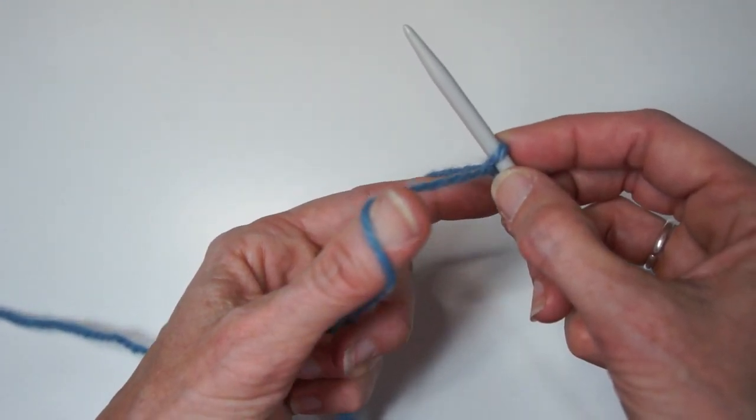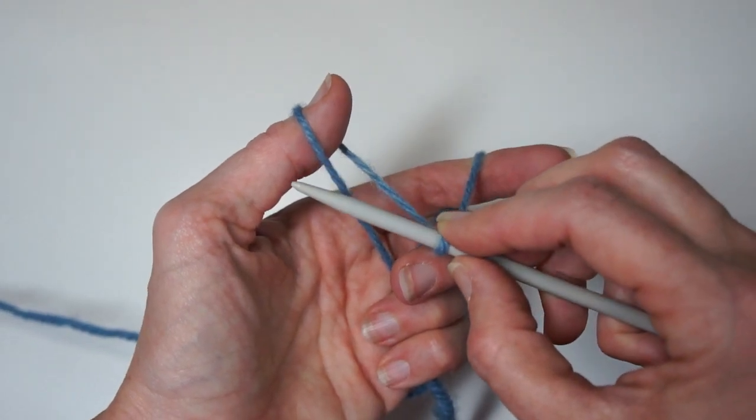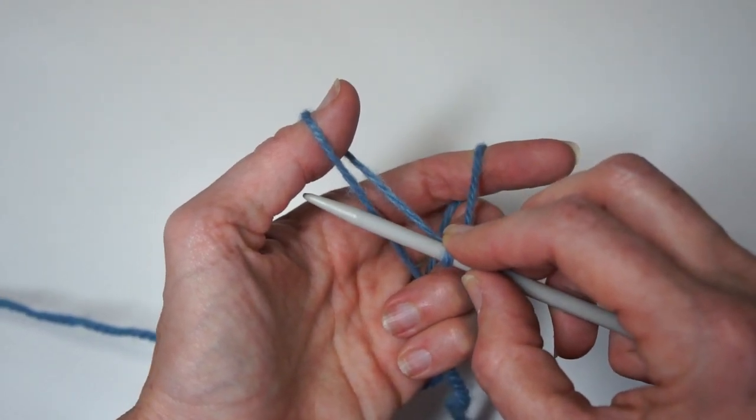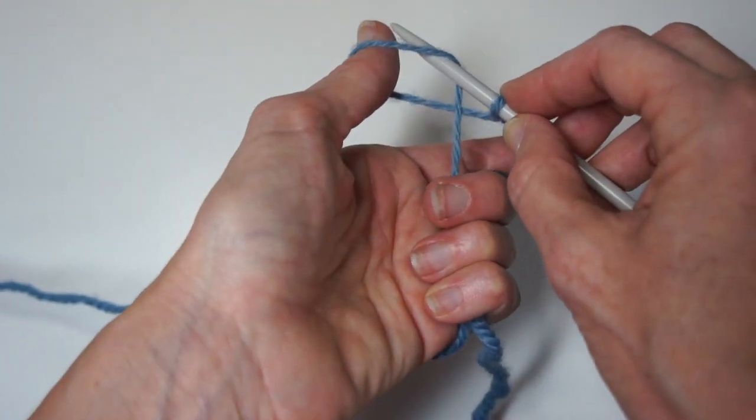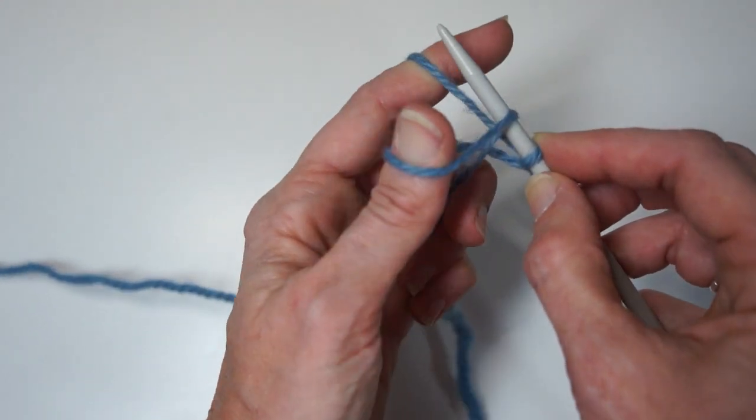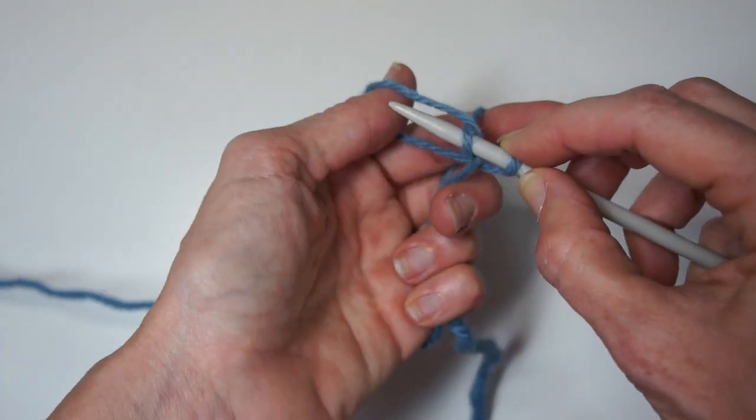And I repeat, the needle goes to the outside of the closest piece of thumb yarn, up into the loop. Notice that makes that closed loop. Over the finger yarn, pull a new loop through another loop.